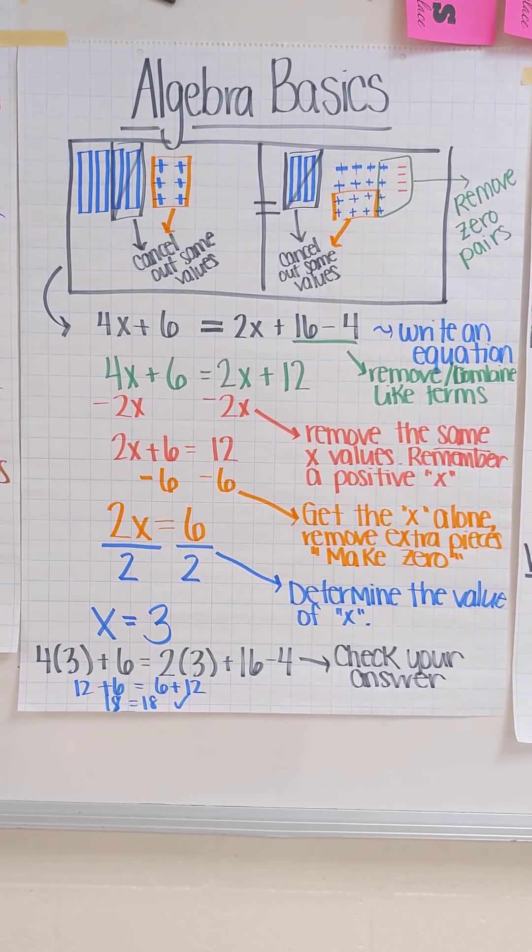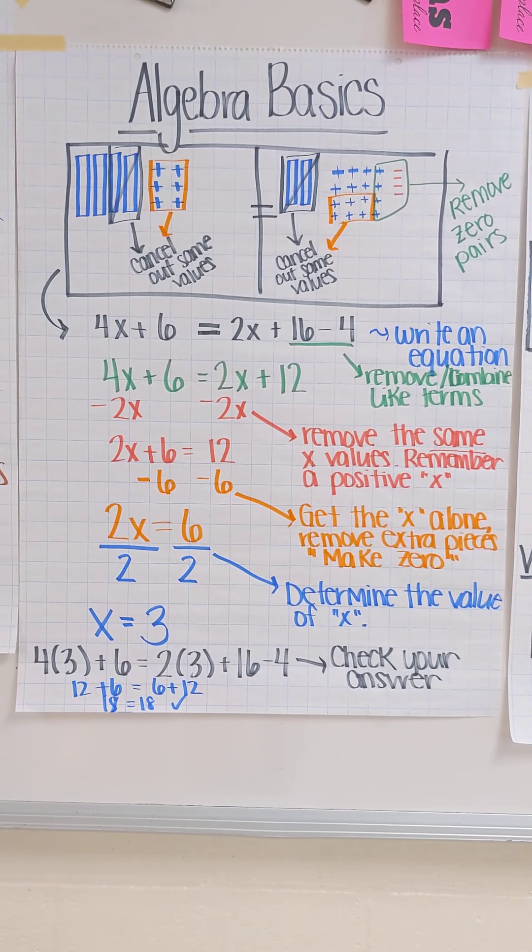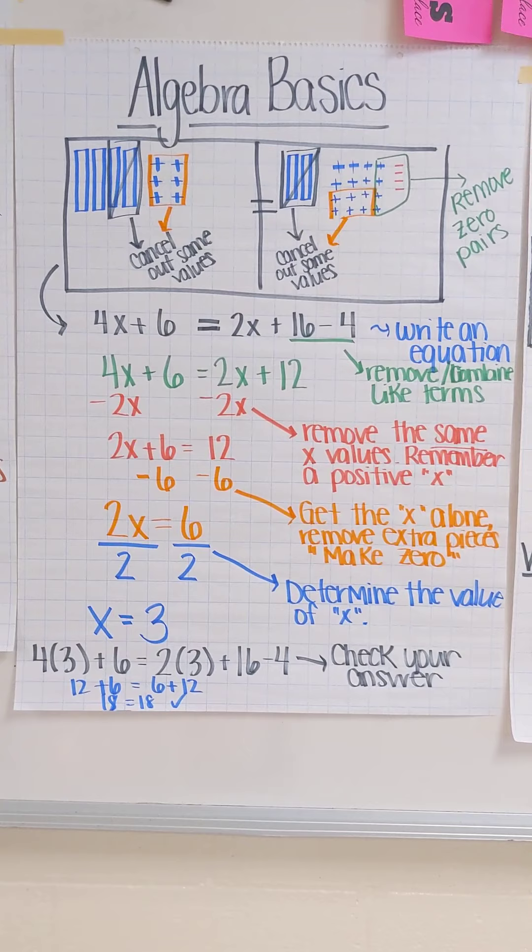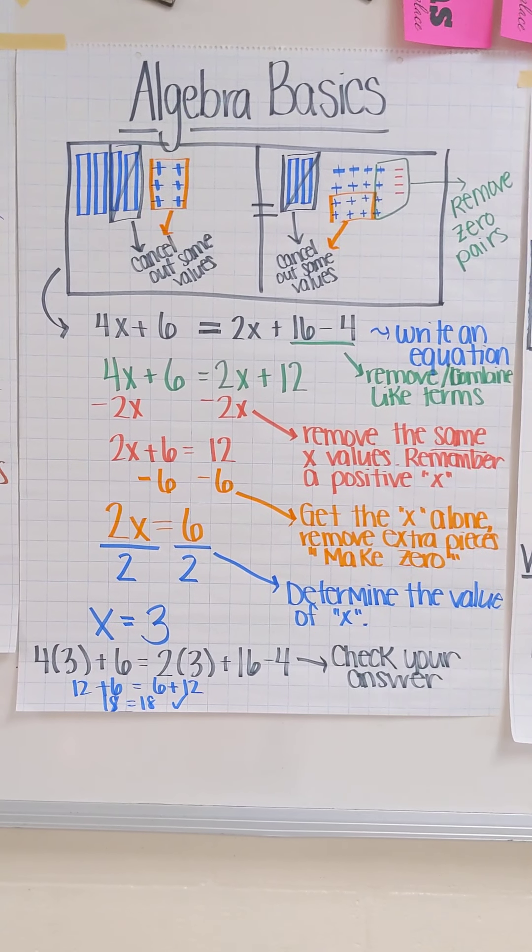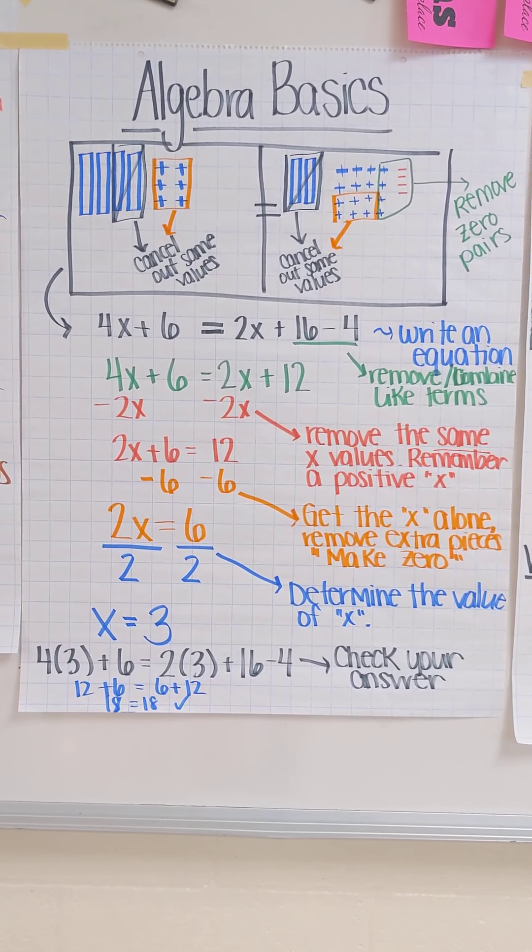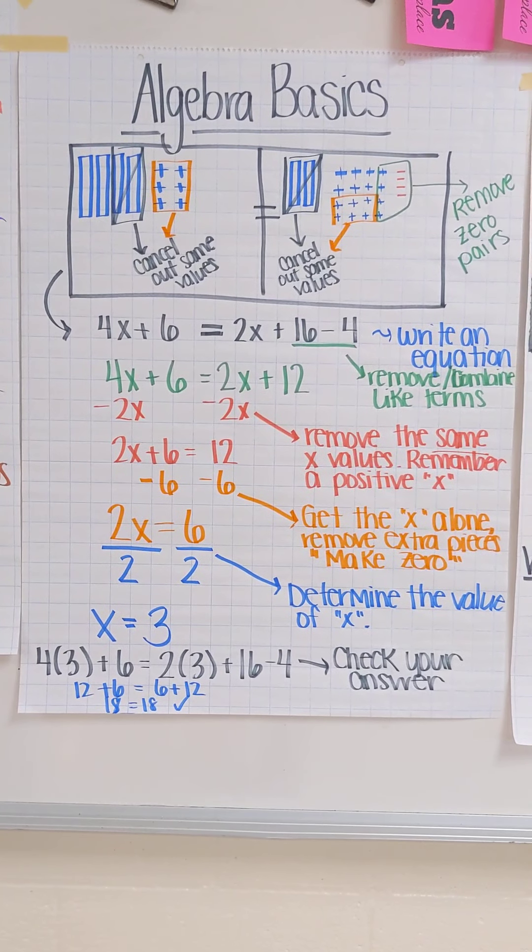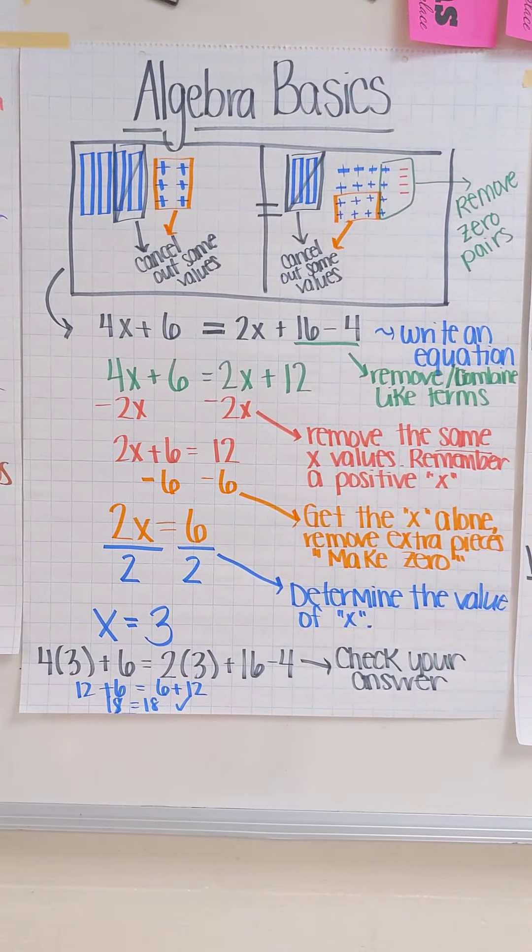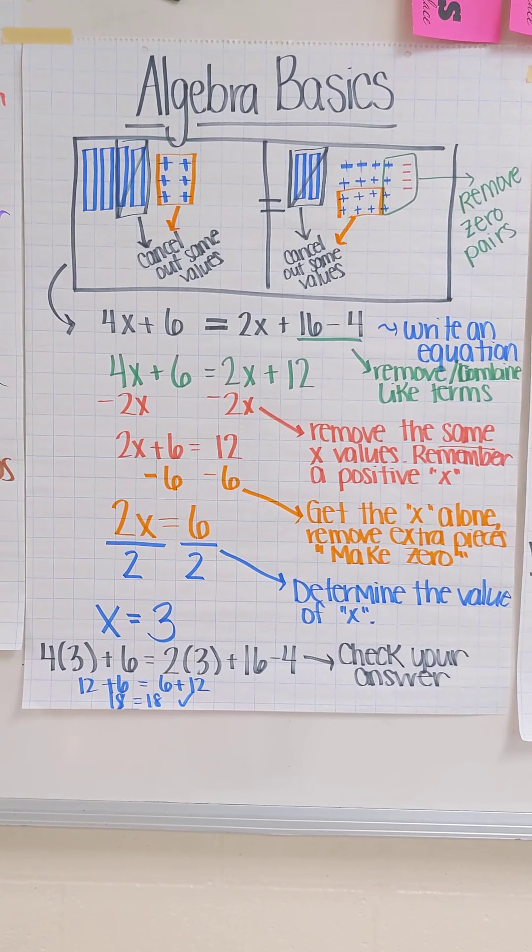We remove the same x values from both sides. There's 4 on one side, there's 2 on the other. So I'm going to combine and move that 2 over. You see that there's 6 units on one side and there's 12 on the other. Well, I'm going to take off those 6 units because I see them both on either side. And then that leaves you with those 2x's to equal that 6. And then you can determine the value of x by using the inverse operation.